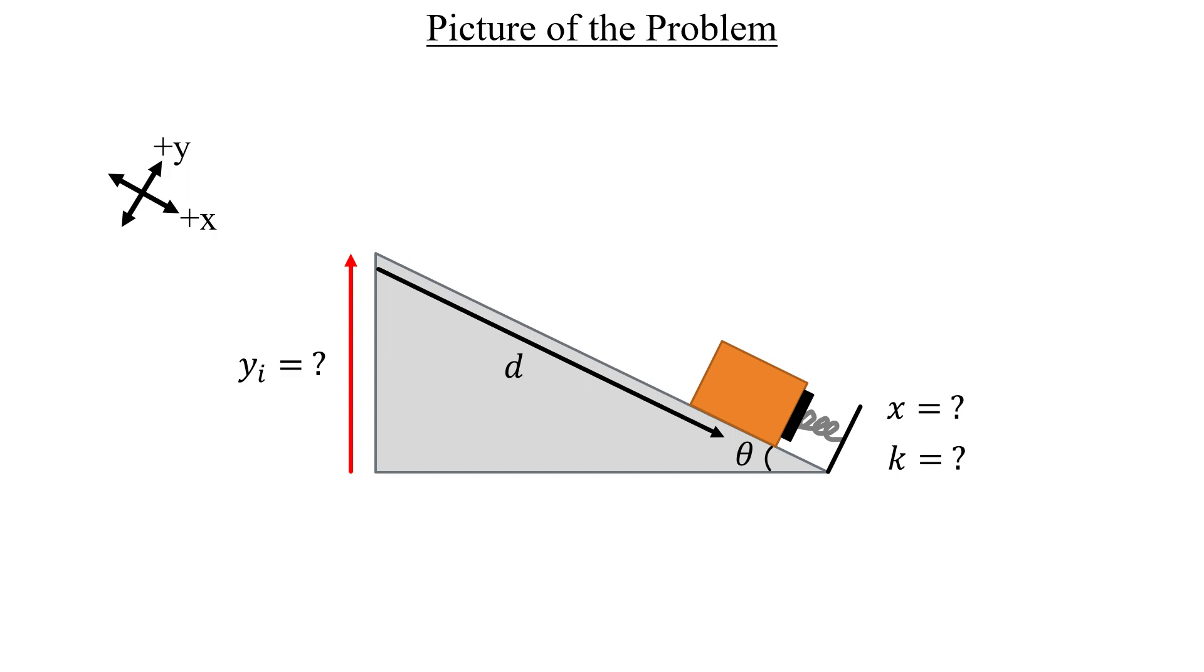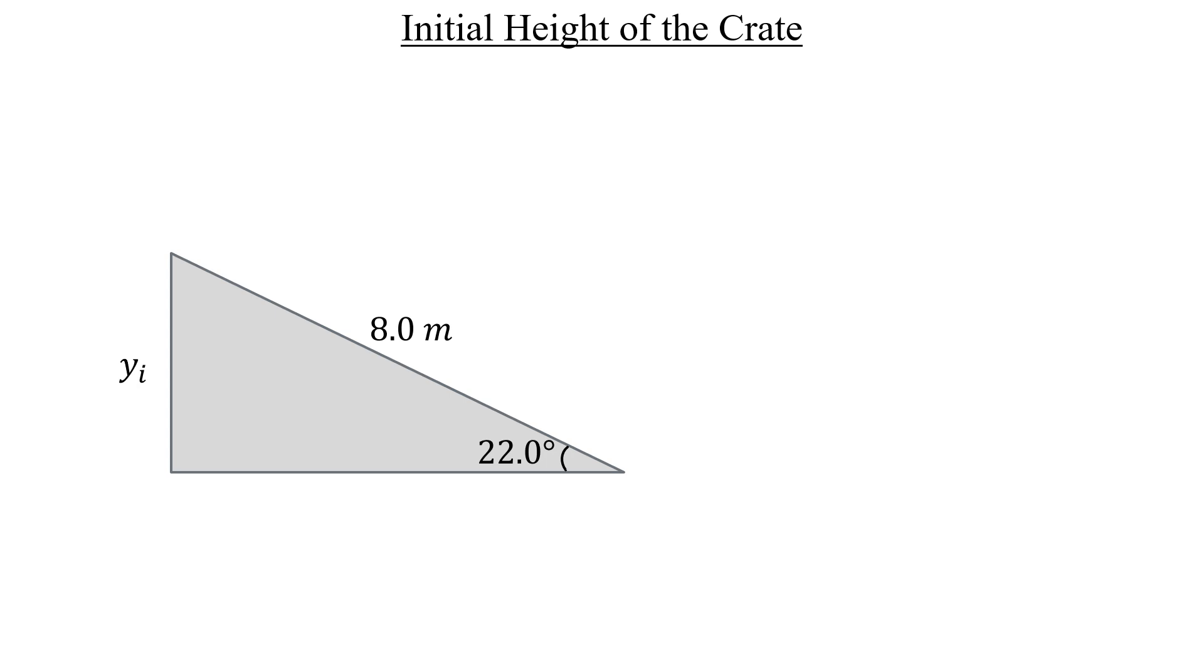Let's start with the initial height. We can keep the ramp in the picture for a nice helpful visual, but I'll move it over to the side since we'll need to use some trig here. Recall that the definition of the sine function is the ratio of the opposite side to the hypotenuse of a right triangle. That means the sine of 22 degrees gives us the ratio of the initial height of a crate divided by the ramp's length of 8 meters.